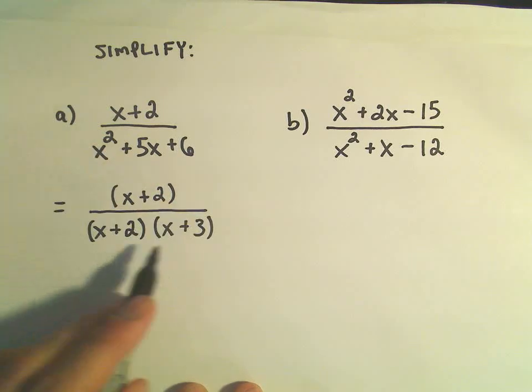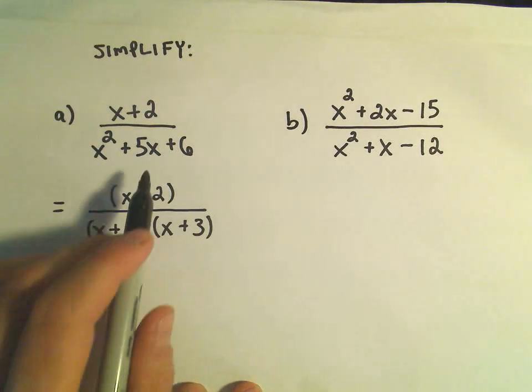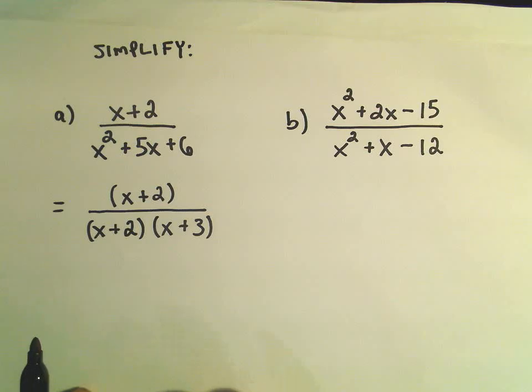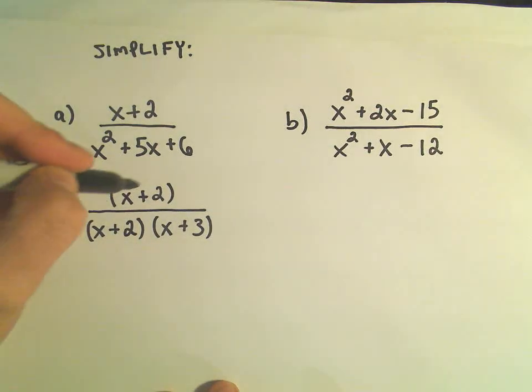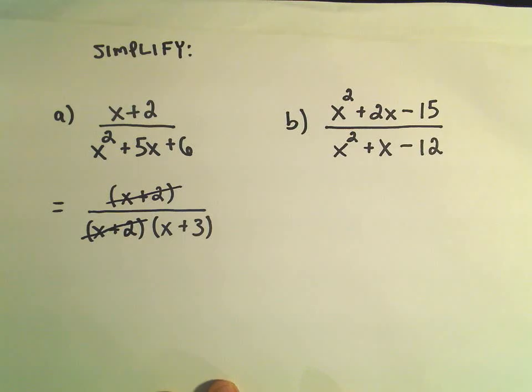So positive 2 and positive 3 - that does multiply to 6 and add up to 5. So at this point we can just cancel out the numerator with the x plus 2 factor in the denominator.